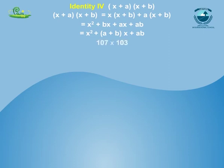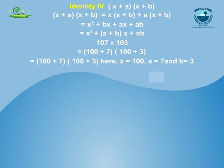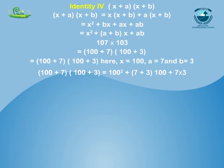To evaluate 107×103, we apply identity (x+a)(x+b). We express it as (100+7)(100+3), where x=100, a=7, b=3. Putting the values in the identity: (100+7)(100+3) = 100² + (7+3)×100 + 7×3 = 10,000 + 1,000 + 21 = 11,021.